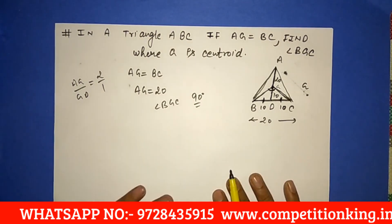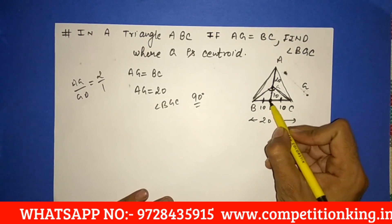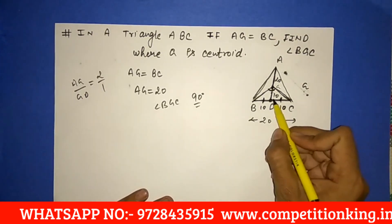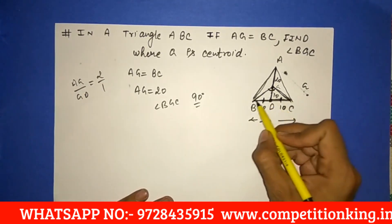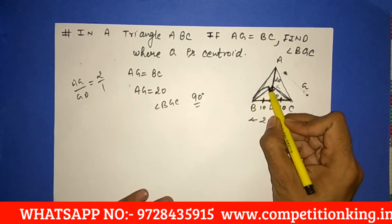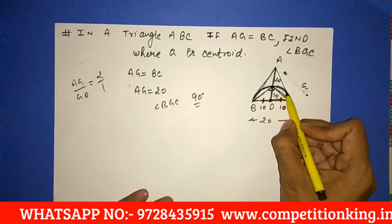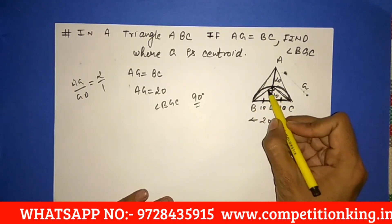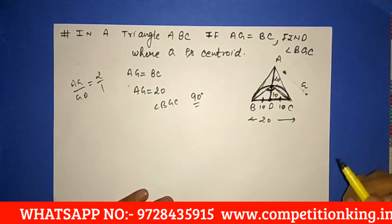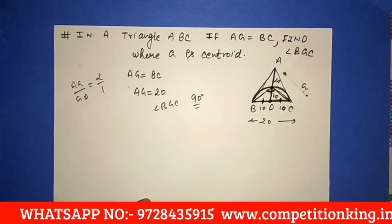You can also understand this another way: taking G as the center of any circle, with GD, GB, and GC all equal to 10 as radii, a semicircle is formed. We know that the angle in a semicircle is always 90 degrees. So angle BGC, by this method also, is 90 degrees.